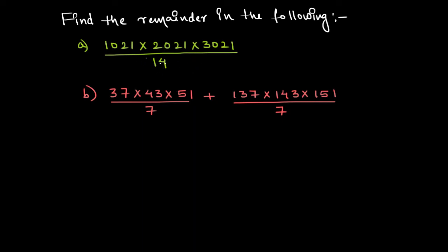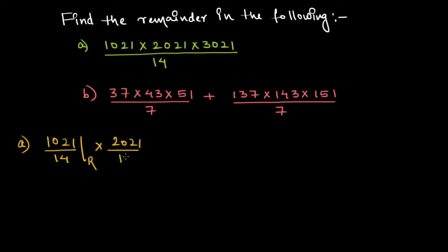Let us try to find the remainder in the following cases. Since we are asked to find the remainder, let us find the individual remainders when we divide the given numbers by 14 and then multiply them. So for this problem, we have 1021 divided by 14, remainder multiplied by 2021 divided by 14, remainder multiplied by 3021 divided by 14, remainder.